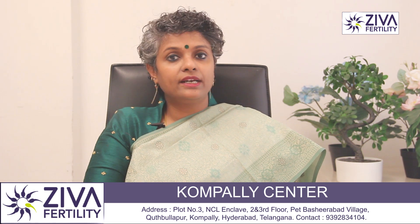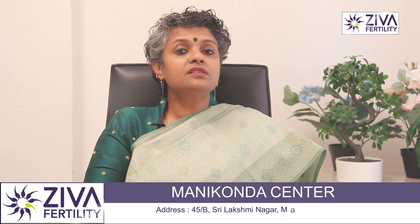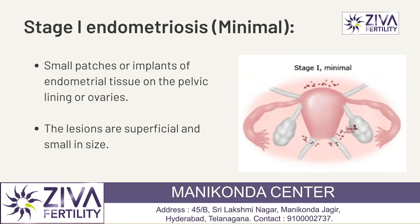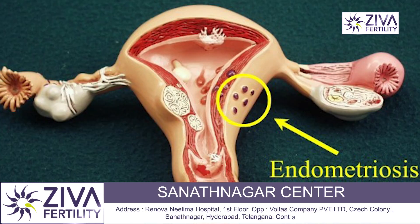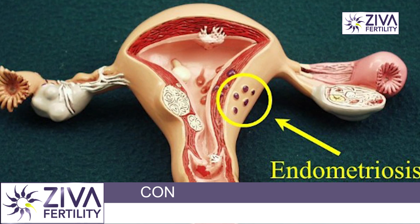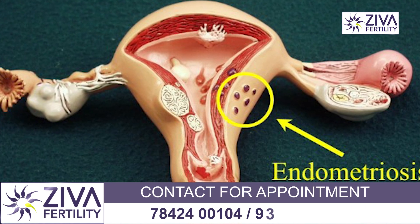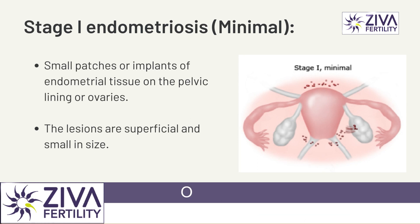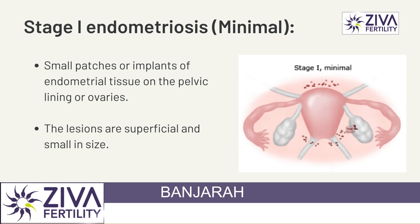Let's look at the four grades of endometriosis. Stage 1, also called the minimal stage: in this stage, there are small patches or implants of endometrial tissue on the pelvic lining or ovaries. The lesions are superficial and small in size.